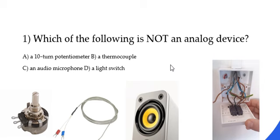Then we have audio microphone. Well, this is another analog device because it converts variations in sound pressure into a corresponding electrical voltage or current, which also represents an analog signal.